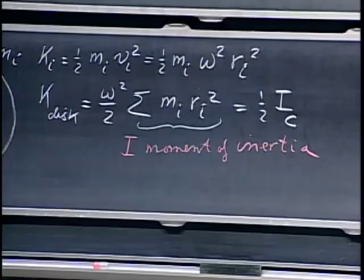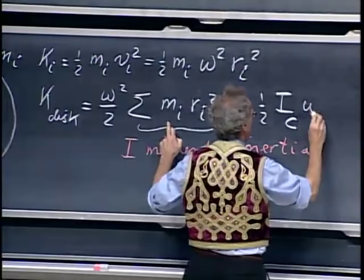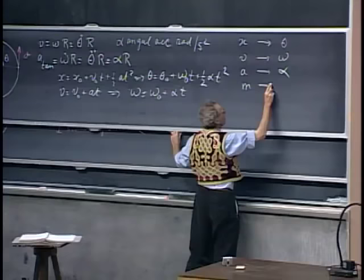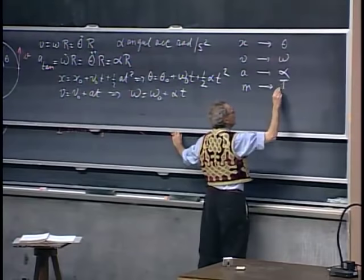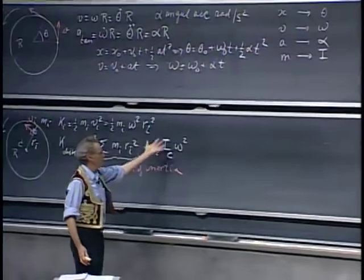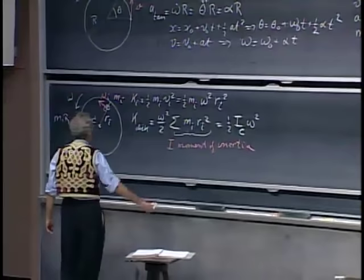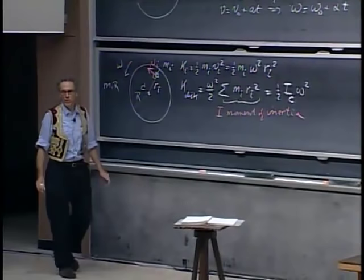This can be written as one-half I-sub-c times omega-squared. You will see shortly why I put a subscript c, because the moment of inertia depends on which axis of rotation I choose. When you see that equation, you say it looks quite similar to one-half mv-squared. So add to the list: going from linear motions to rotational motions, you replace mass with the moment of inertia, and you get back to your one-half mv-squared. The moment of inertia calculation is, frankly, a boring job — it's pure math, some integral.